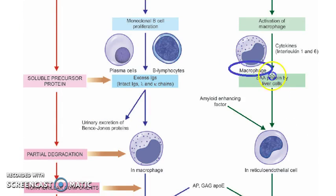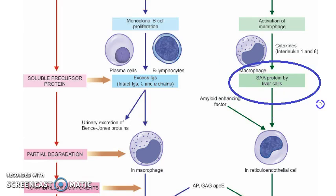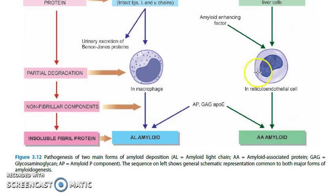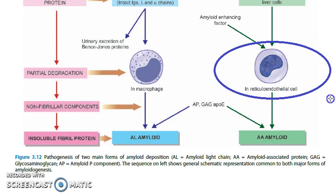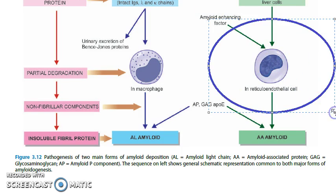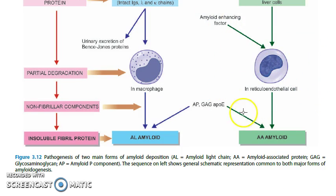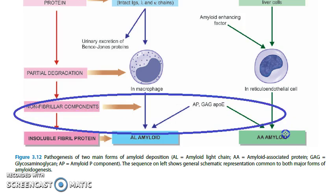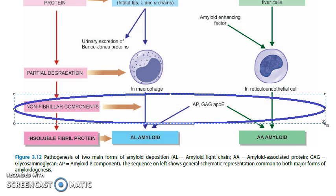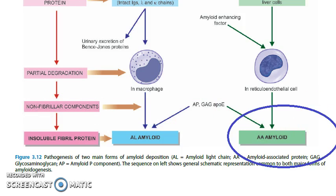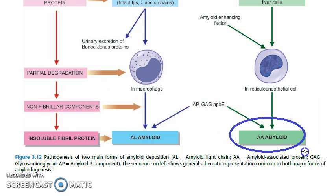The macrophages are going to release cytokines — that is interleukin-1 and interleukin-6. These are going to activate the liver to produce SAA, that is the serum amyloid associated protein. Now the reticuloendothelial system is going to try to partially degrade these proteins. Then the non-fibrillar components like the AP component, glycosaminoglycan, and APOE come and stabilize these deposits, forming the AA amyloid.